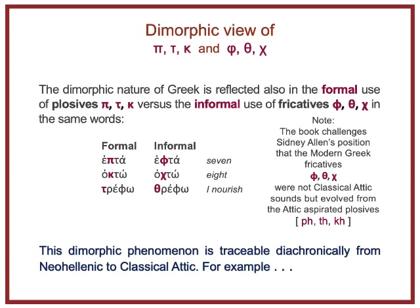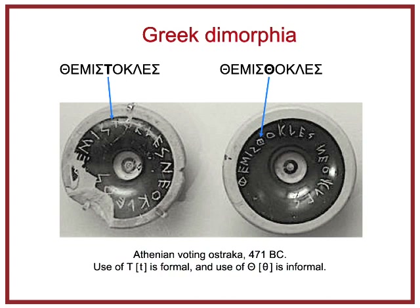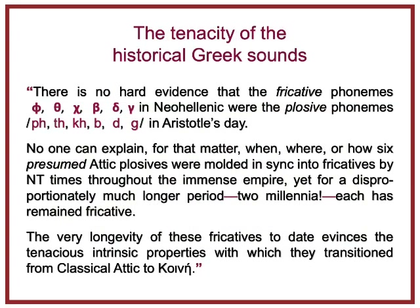Here are two Athenian voting ostraka from 471 BC. On the left, the name Themistocles spelled with a tau; on the right, the same name spelled with a theta. Something can be said about the tenacity of the historical Greek sounds, especially these six fricative sounds. There is no hard evidence that the fricative phonemes—phi, theta, chi, vita, delta, gamma—in Neo-Hellenic were the plosive phonemes in Aristotle's day.